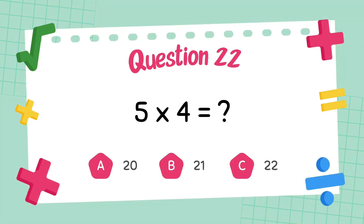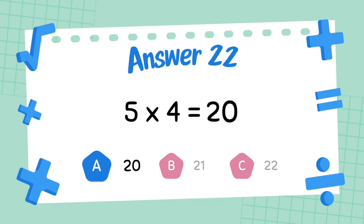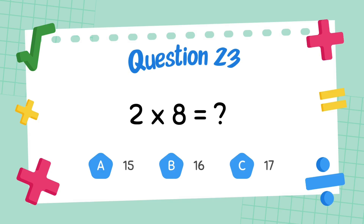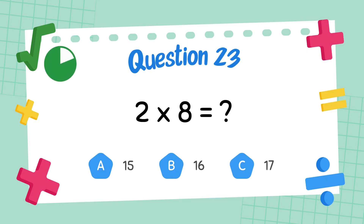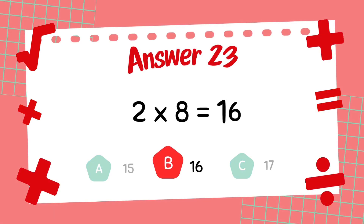What is 5 multiply 4? The answer is 20. What is 4 multiply 4? The answer is 16.